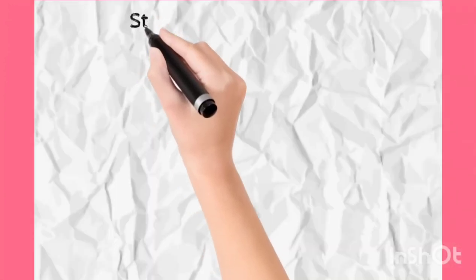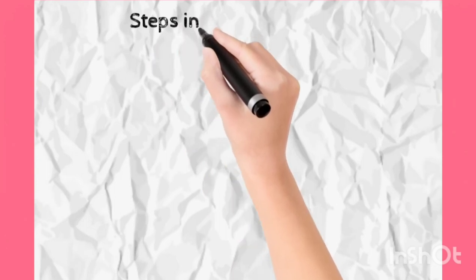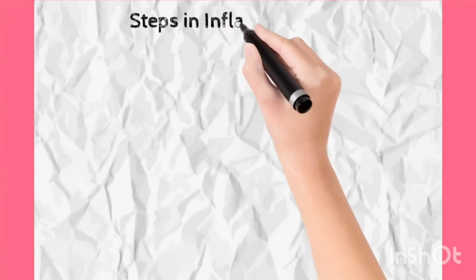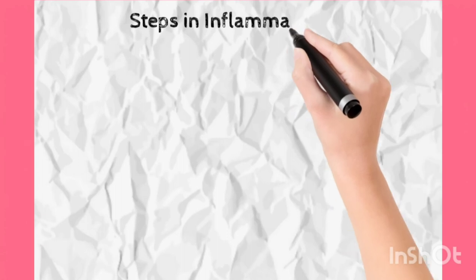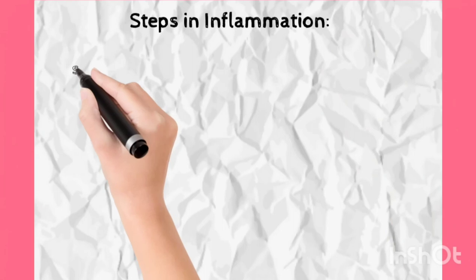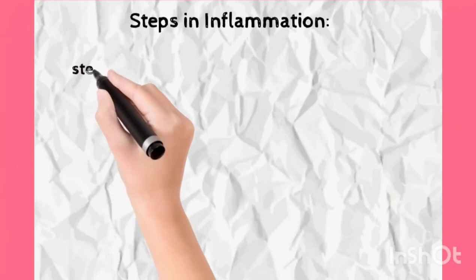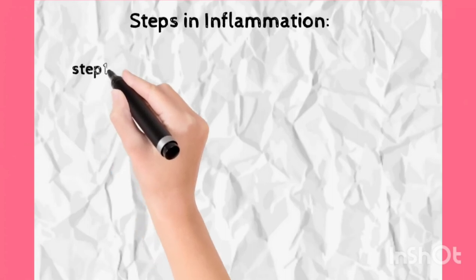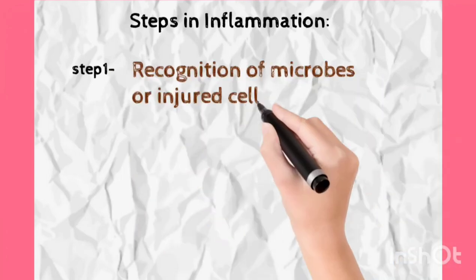Now we will see what are the steps followed by leukocytes and all the other components of our body during inflammation. We roughly have five steps. The first step is recognition of the infectious agent or foreign substance — whatever is causing the infection, injury, or foreign body presence (like sutures or a prosthesis), our body first recognizes it.